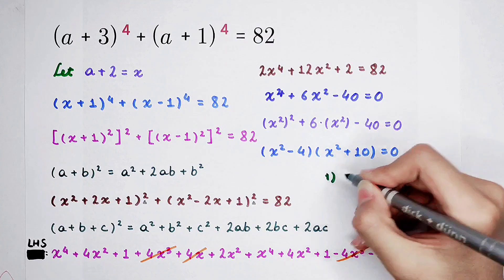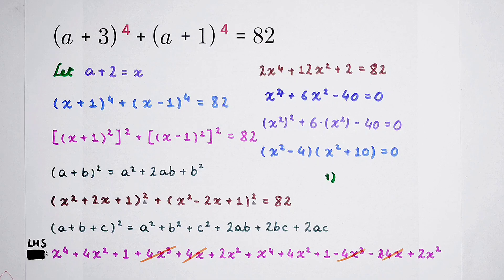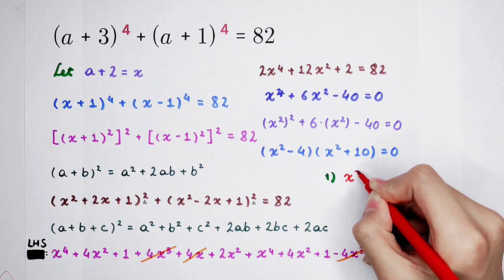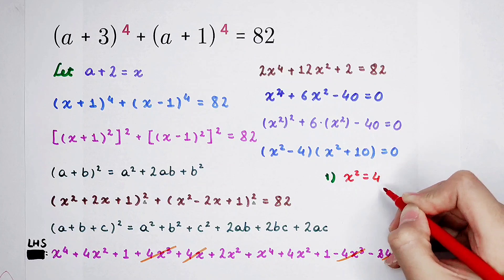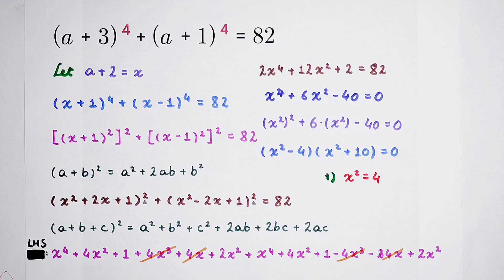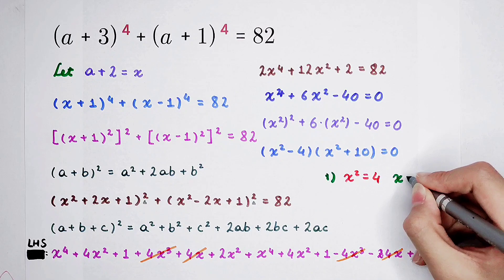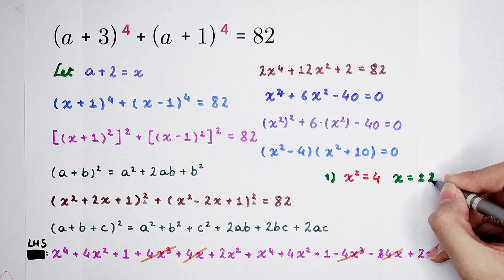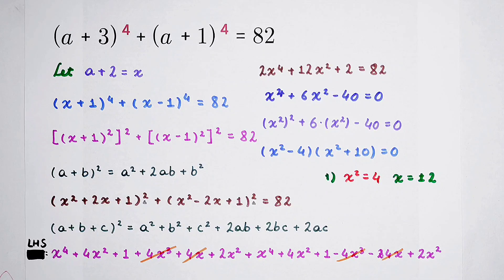Two cases. First case: x is negative or positive 2. That means x squared is 4. Then x is positive or negative 2. And A is what? Zero or negative 4.